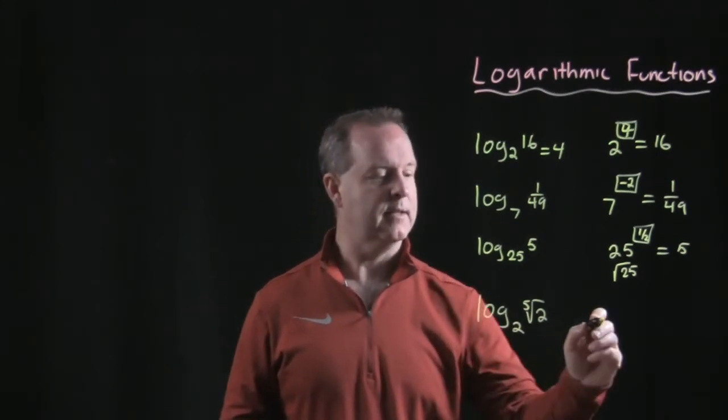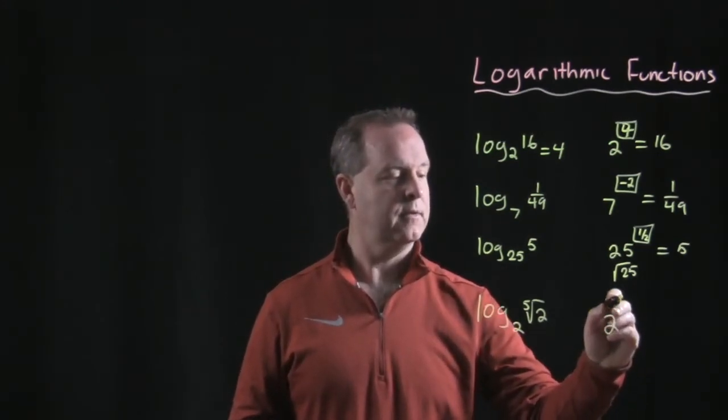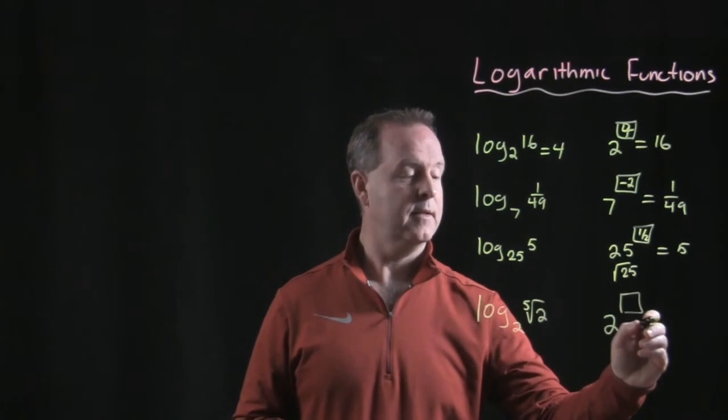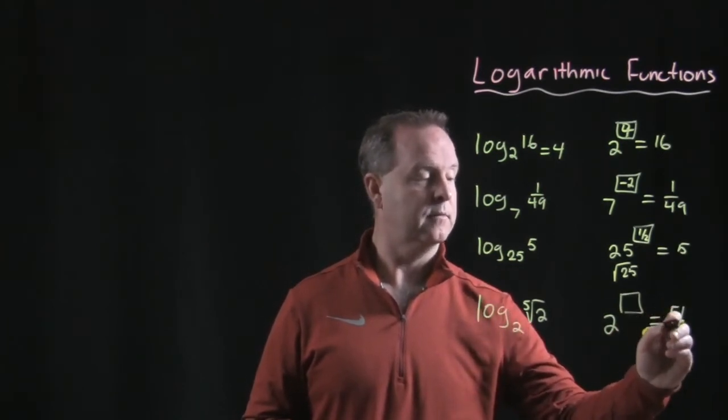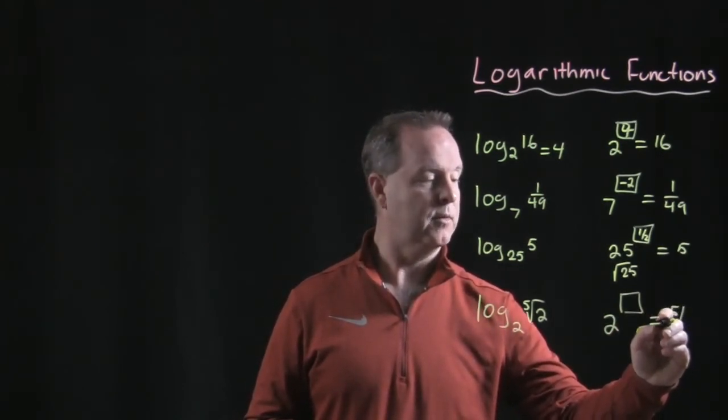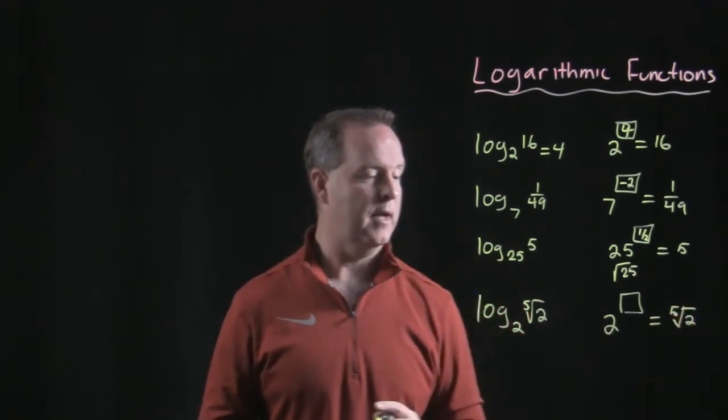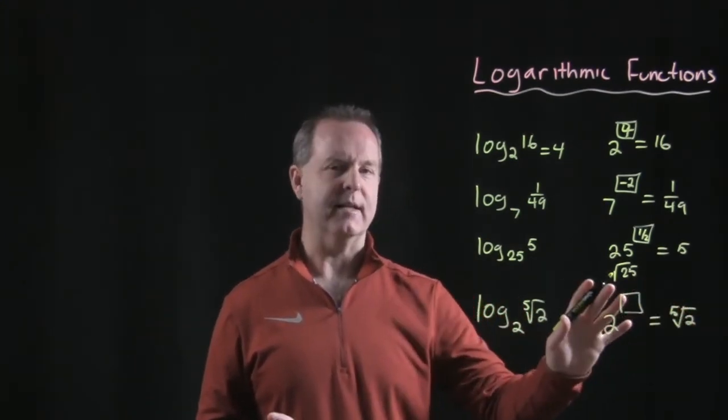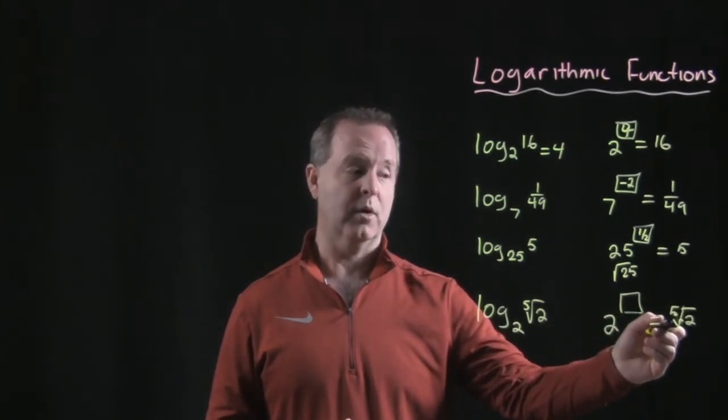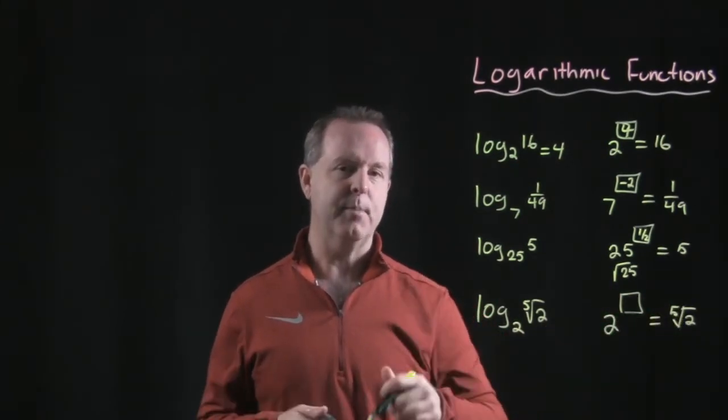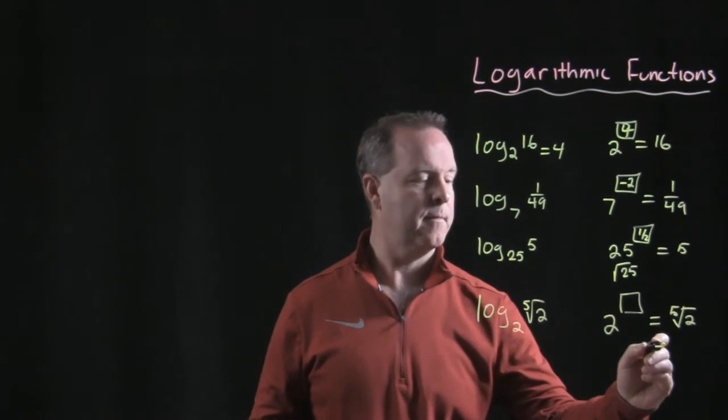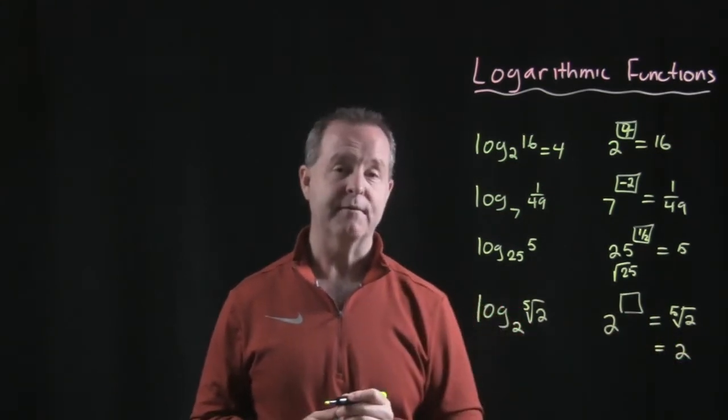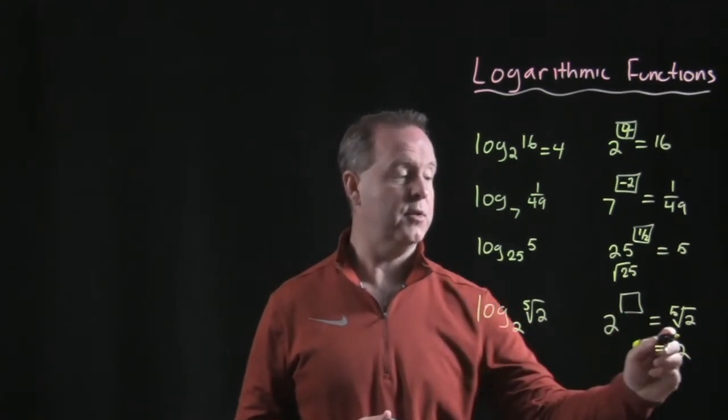How do we think about that? Likewise, that's 2 to the something equals fifth root 2. Well, that was a bad root 2 wasn't it? There we go, that was saved. And how would we write... I don't know what that means, but I know that this is in root world. Maybe it'll make more sense if I put that in exponential world. How do you write fifth root 2 in exponential world? That's 2 to the 1/5.